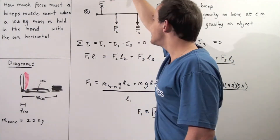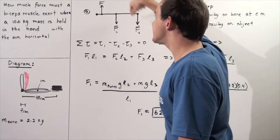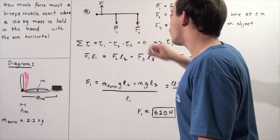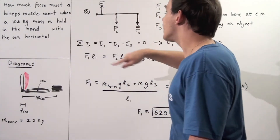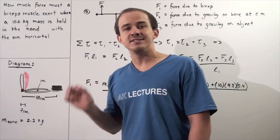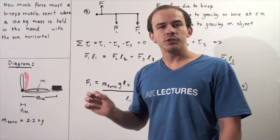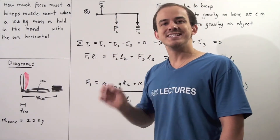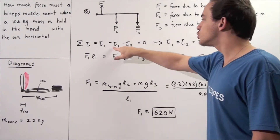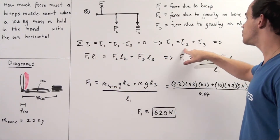We choose upward to be positive and downward to be negative. Force one creates a torque in the counterclockwise direction, so we choose that torque to be positive. The torques created by forces two and three are negative because they point in the clockwise direction. Because we have static equilibrium — the arm is not moving, not translating or rotating — we can sum all torques and set that sum equal to zero. So: torque one minus torque two minus torque three equals zero, which rearranges to torque one equals torque two plus torque three.